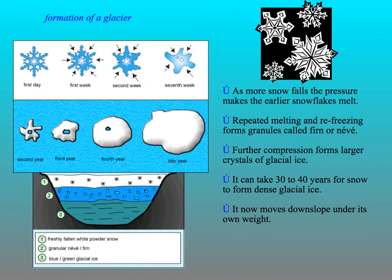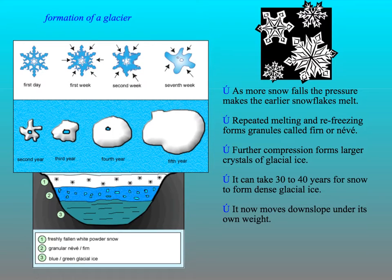A glacier forms through the repetition of snow falling, and then as snow falls on top of the last year's snow, it starts to squeeze the air out of it. As the air is squeezed out, it becomes more compact and solid, forming névé. Over 30 to 40 years this process repeats, and then we've got glacial ice forming. This is very similar to if you're making a snowball — the more you squeeze and compress it, the more solid it becomes, and that's the process that the glacier takes.